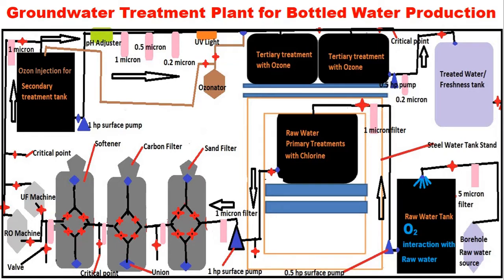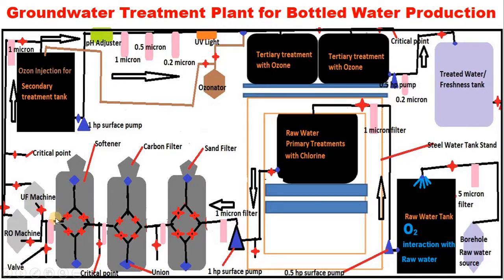The softener uses the same valve configuration — two valves closed, two opened — and water flows in and comes out softened. After that, a 1-micron filter removes any debris. This is another critical sampling point where you test for total hardness to confirm that calcium and magnesium ions are trapped and the hard water entering has become soft at this point.